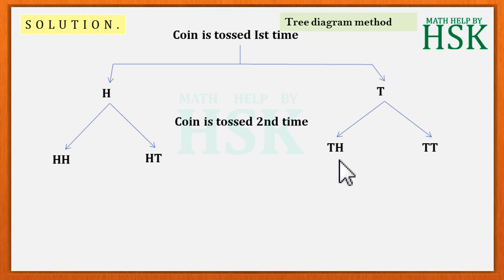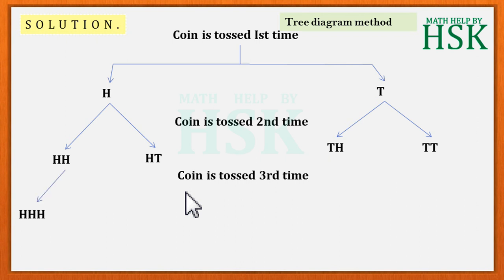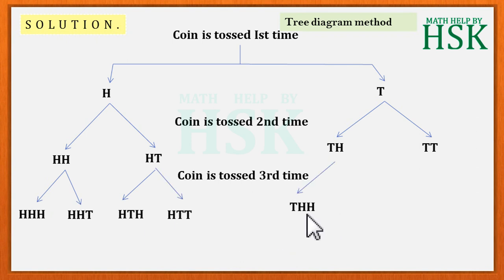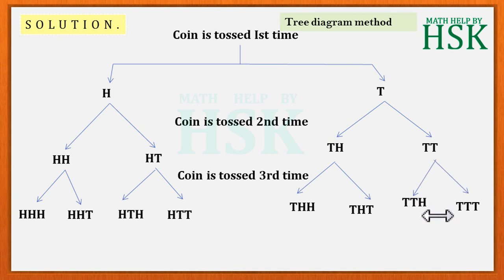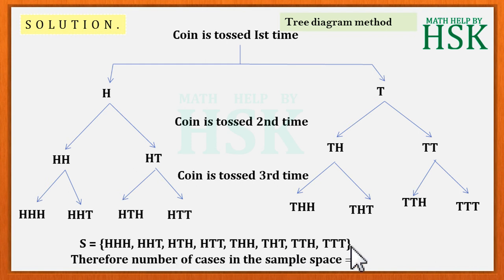The events that result after the third toss can be represented by drawing branches as: head-head-head, head-head-tail, head-tail-head, head-tail-tail, and tail-tail-tail. The sample space can be written as set S as shown, and the total number of events or cases in the sample space is equal to eight.